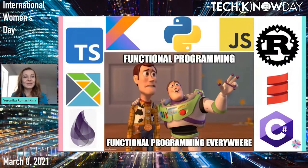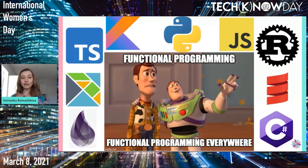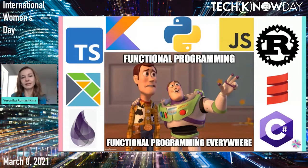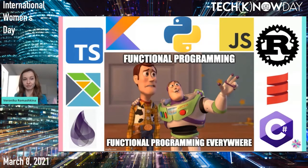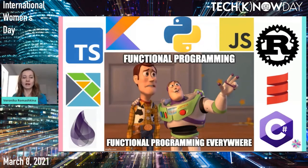Functional programming is actually everywhere already. You see a number of different programming languages on the screen, and not all of them are functional by design. Some were created as functional languages, but some are natural OOP languages that are getting elements and concepts from functional programming. For example, a recent addition to Python is pattern matching, which is one element of functional programming. You can see that functional programming is seeping into all other languages. Also, functional programming is used to create other languages and compilers.